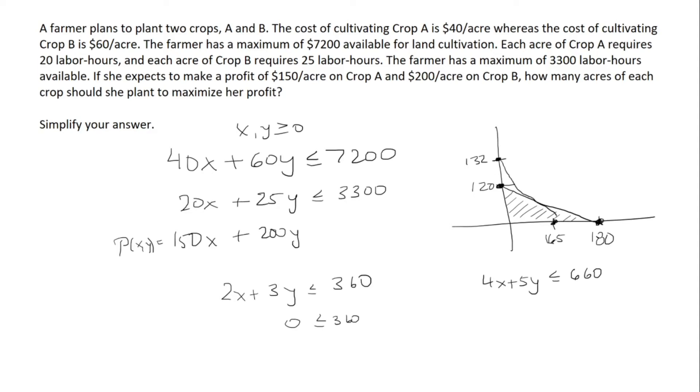So we connect these two points. We can plug in 0, 0 for x and we get that 0 is less than or equal to 660, so that means we want to include the origin.